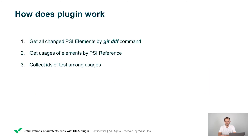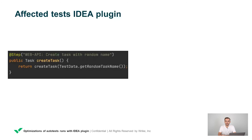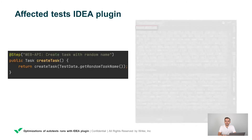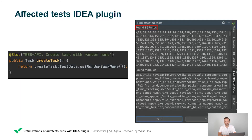The common algorithm can be described in three simple steps. First, find all PSI elements that were changed in our Git branch. Then, find all usages of these changes in tests via PSI Reference. And lastly, collect all affected test IDs. For our original example, this method with one and a half thousand usages affects more than eight thousand tests across tens of different modules. Without this plugin, we would have to run all our tests, since it's useless to try to find affected tests manually. But with the help of this plugin, we are able to run the exact set of tests needed to make sure that everything is fine.